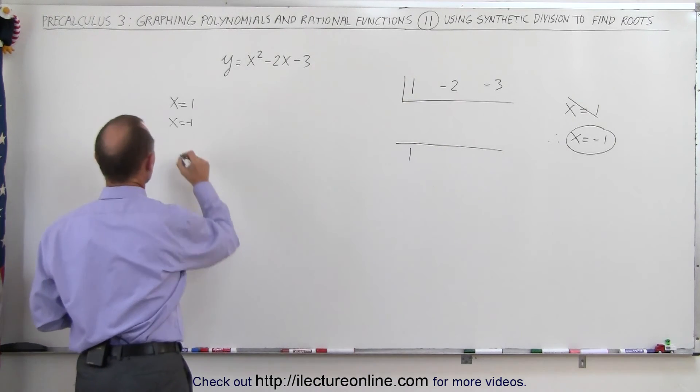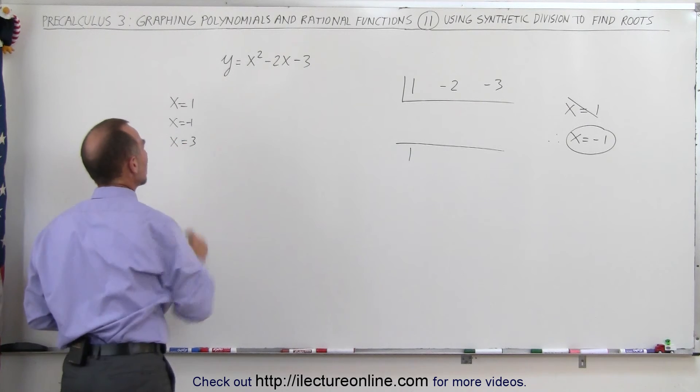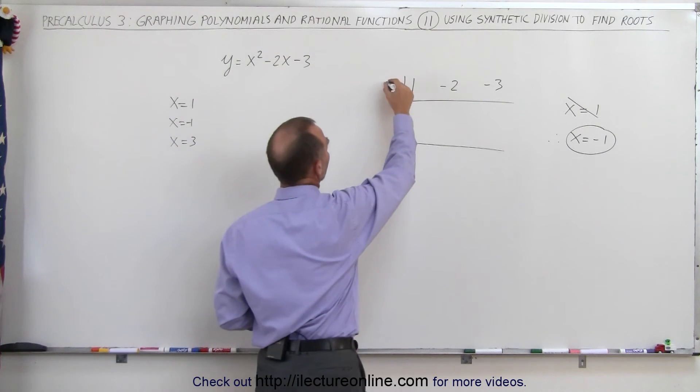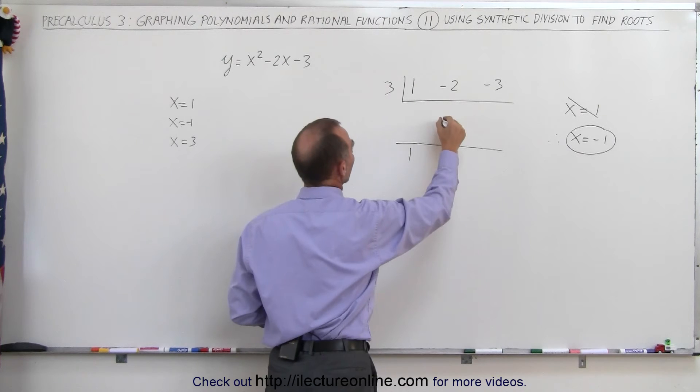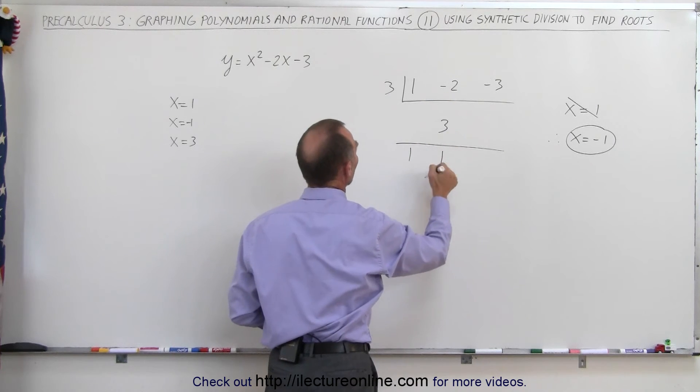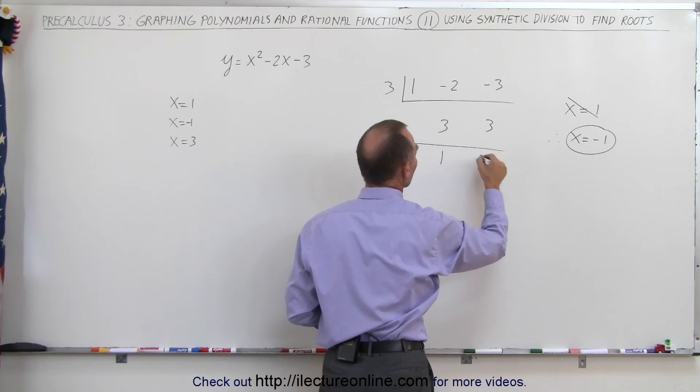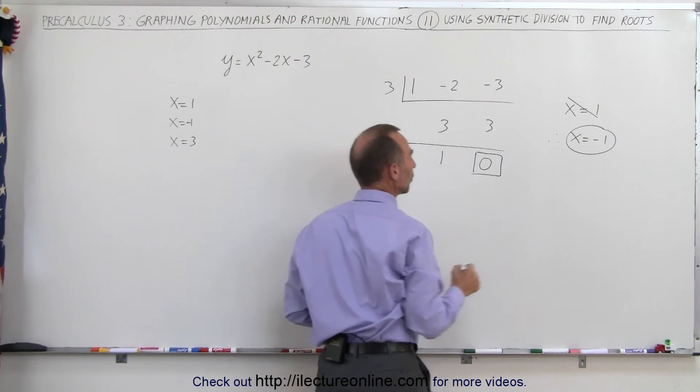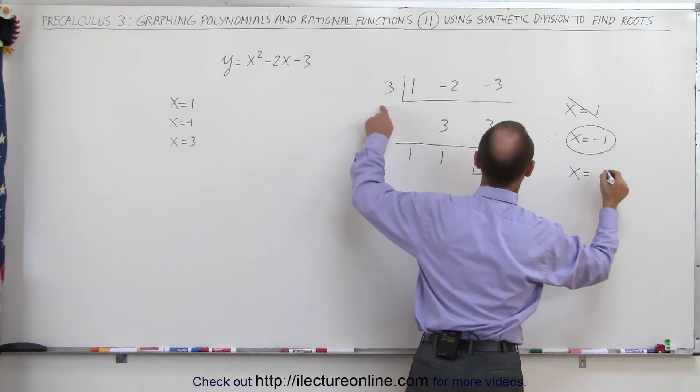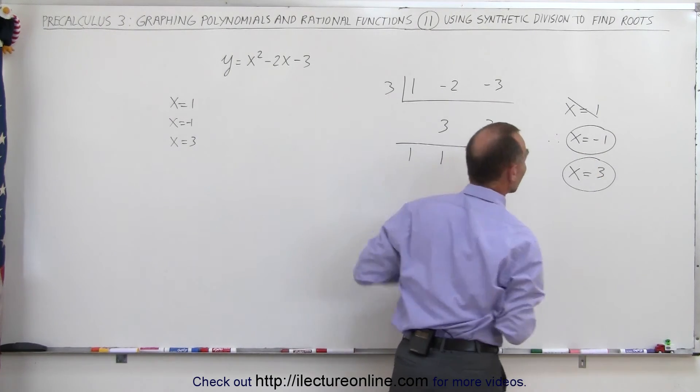And let's try x equals three. We put a three over there. Three times one is equal to three. Negative two plus three is a positive one. Three times one is three. Add those together, I get zero. And sure enough, I found my other root. So, x equals a positive three is my second root. There are the two roots.